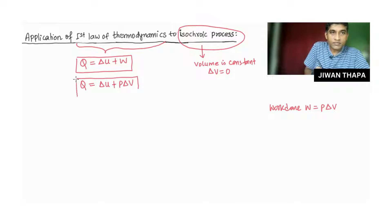For isochoric process, delta V is 0. Therefore, Q equals delta U.